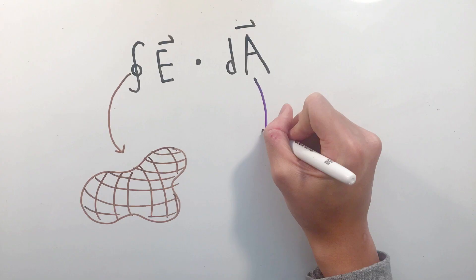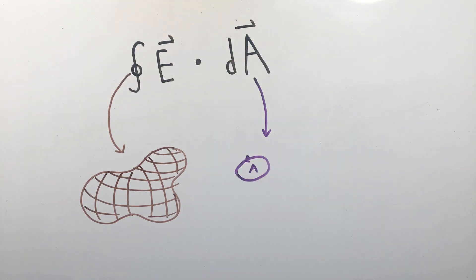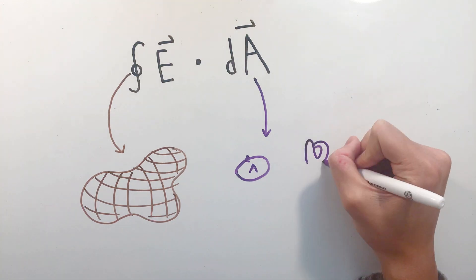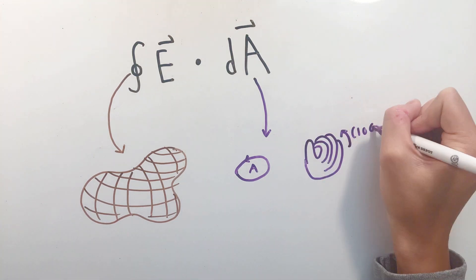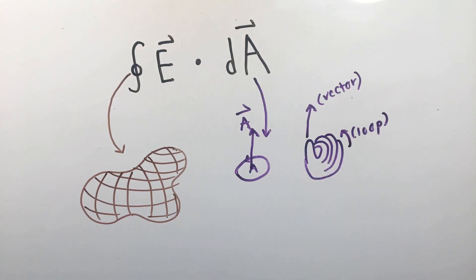Another interesting thing about the flux formula we see is that it involves the dot product between two vectors, electric field and area. And while the E, or electric field vector, is quite self-explanatory, the area vector is actually the vector with magnitude A, or the area of your shape, with a direction that can be calculated through the right-hand rule, curling your fingers around the area loop, with your thumb pointing in the direction of A.